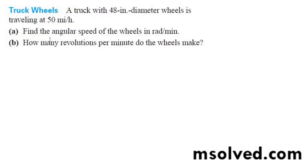So we've got a truck going 50 miles an hour. It's got a wheel diameter of 48 inches. I'm going to figure out the angular speed in radians per minute, and then how many revolutions per minute does the wheel make.